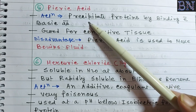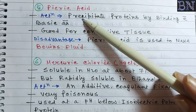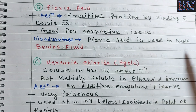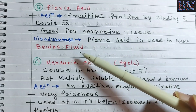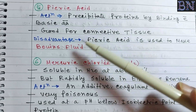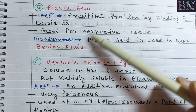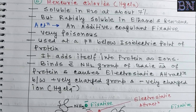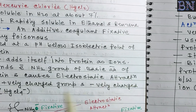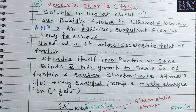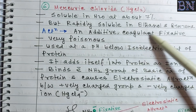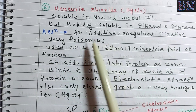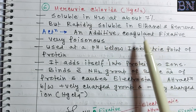The next simple fixative is picric acid. Picric acid precipitates proteins by binding with basic amino acids. It is good for fixation of connective tissue. Picric acid is rapidly soluble in ethanol and benzene. It is an additive fixative, meaning it adds to the protein, and it is also a coagulant fixative, meaning it causes coagulation of the protein.